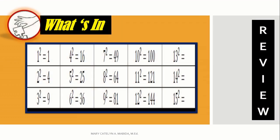What's in? Here is a list of the first 15 perfect squares. Let us familiarize them. 1 squared is equal to 1. 2 squared is equal to 4. 3 squared is equal to 9. 4 squared is equal to 16. 5 squared is equal to 25. 6 squared is equal to 36. 7 squared is equal to 49. 8 squared is equal to 64. 9 squared is equal to 81. 10 squared is equal to 100. 11 squared is equal to 121. And 12 squared is equal to 144.